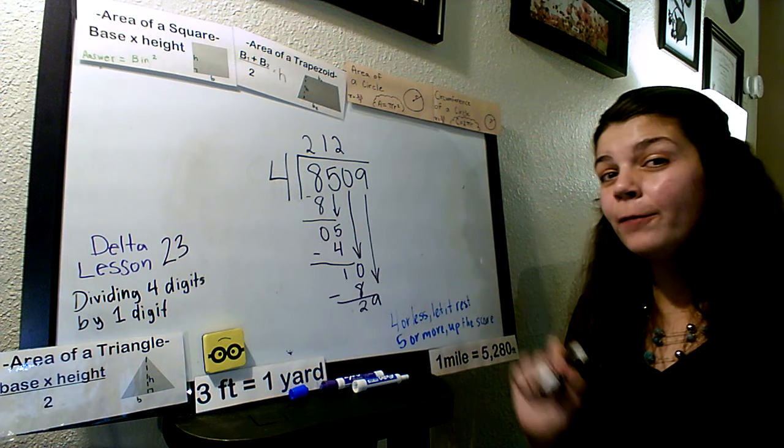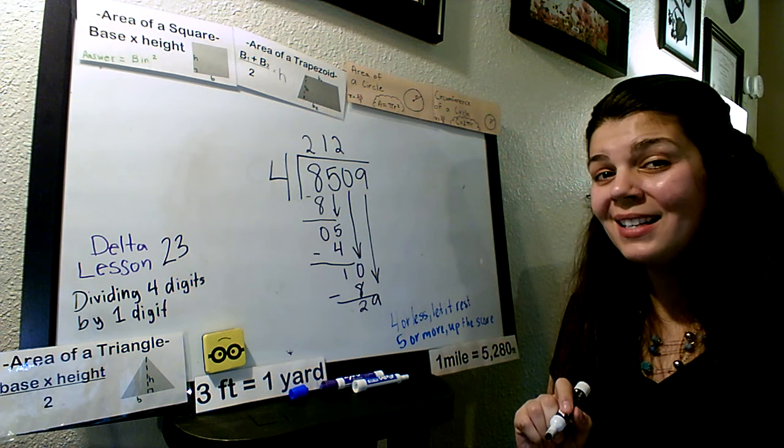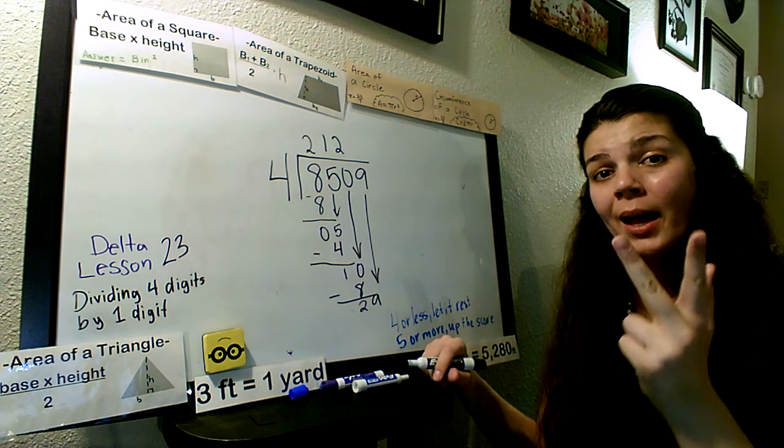I drop my last number. 9. How many 4s go into 29? 4, 8, 10. 4, 8, 12,